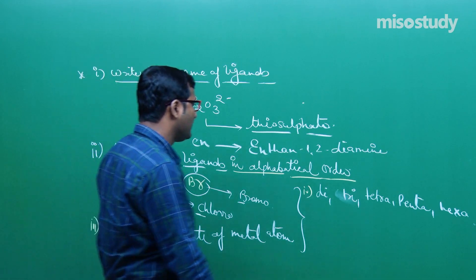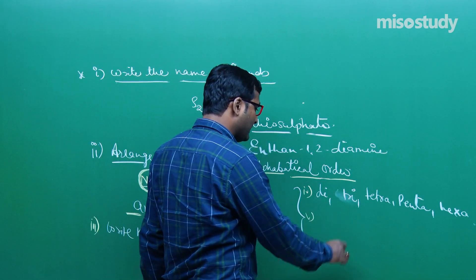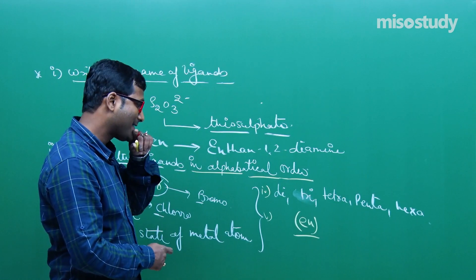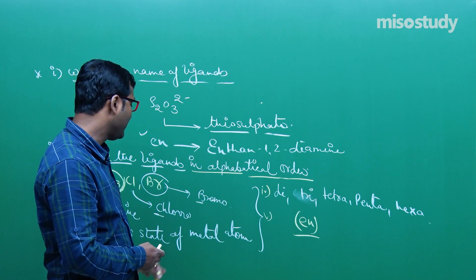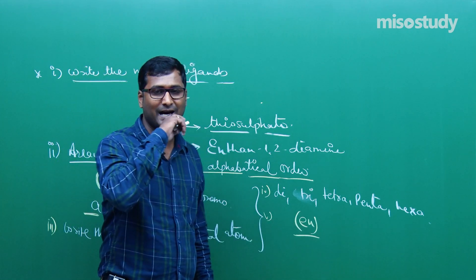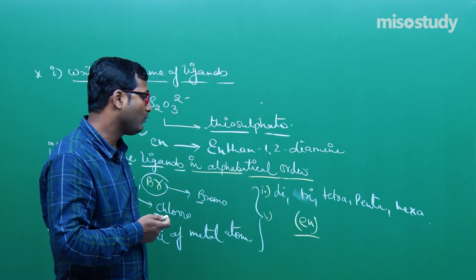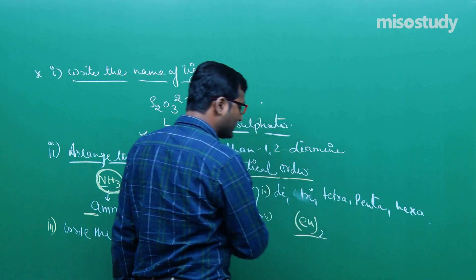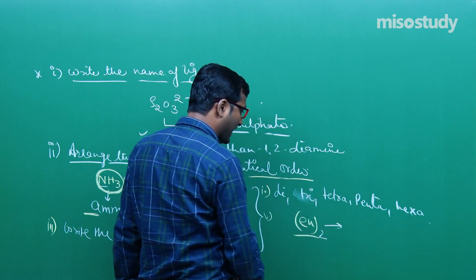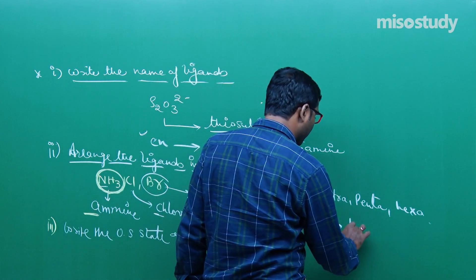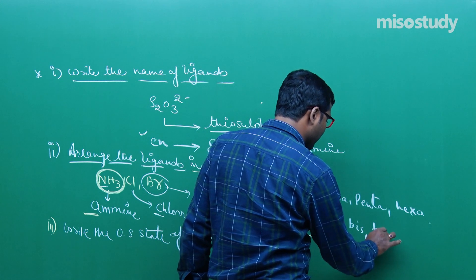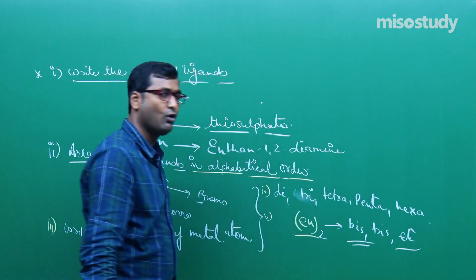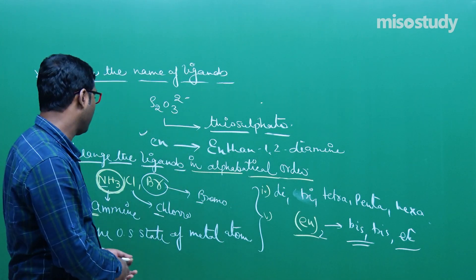For example, if I write NH3 whole 6, that is hexaamine. If like Cl4, that is tetrachlorido or chloro. Fifth rule: if the ligand itself has 2 donor atoms — like EN, ethane-1,2-diamine or ethylenediamine, which already has 'di' — then for 2 we use bis, for 3 we use tris, for 4 tetrakis, for 5 pentakis, and so on.